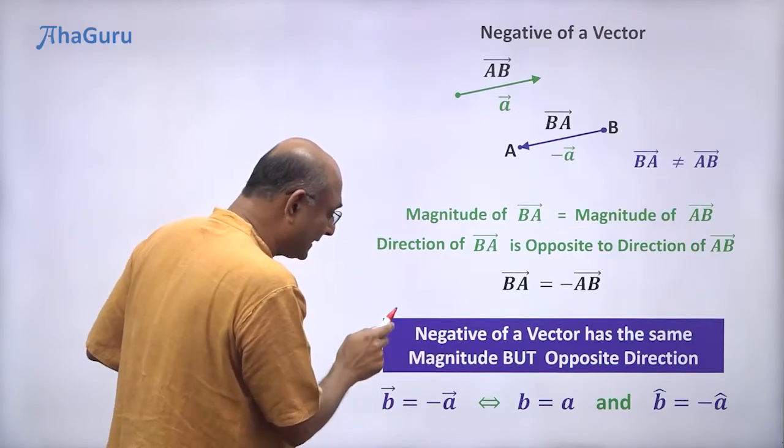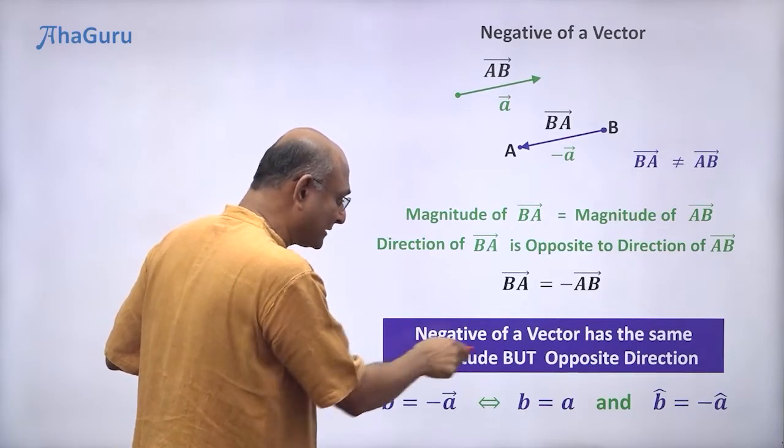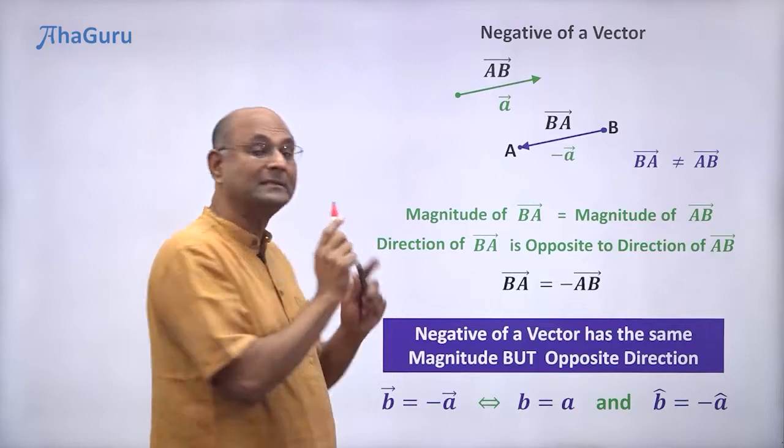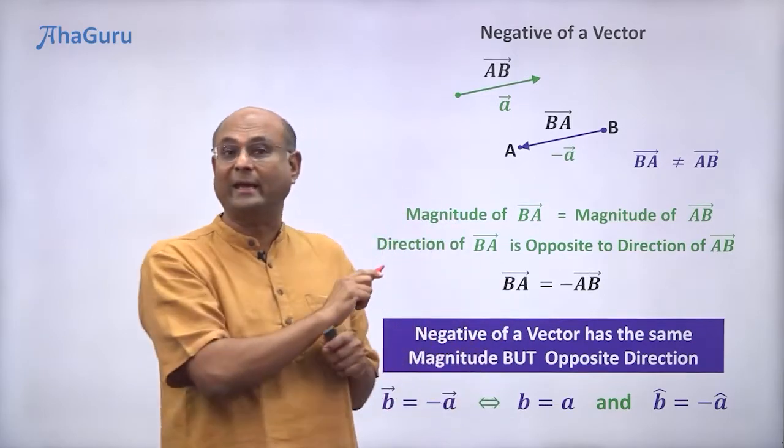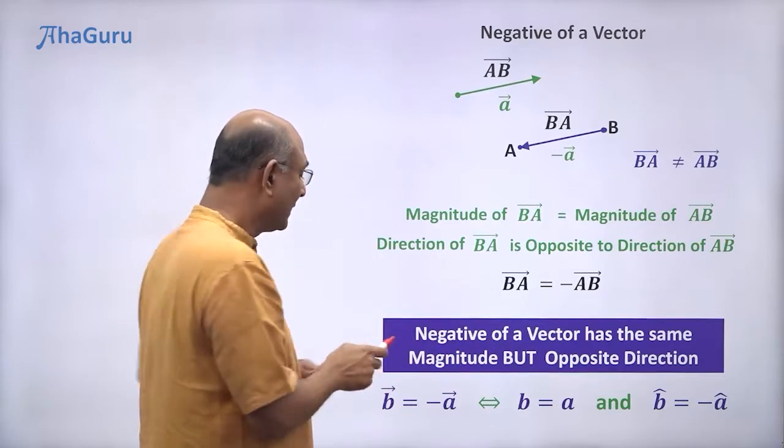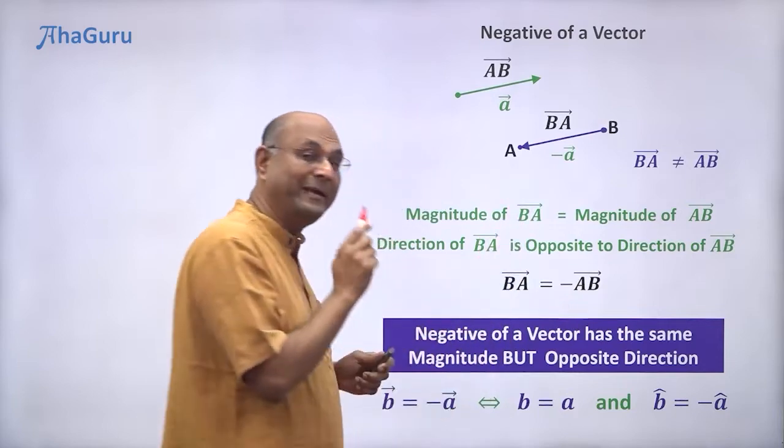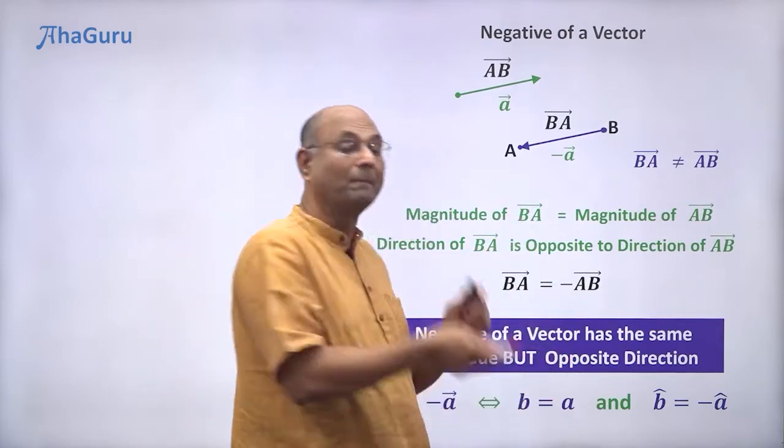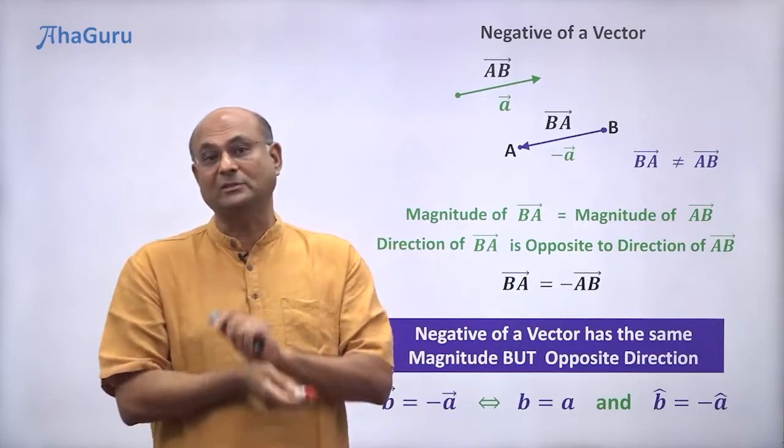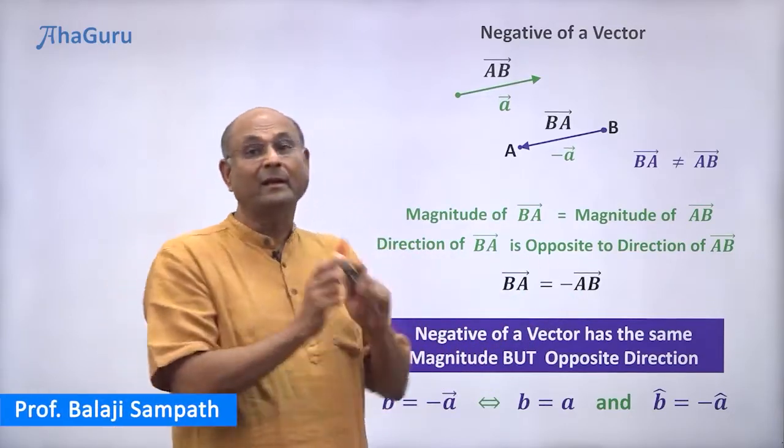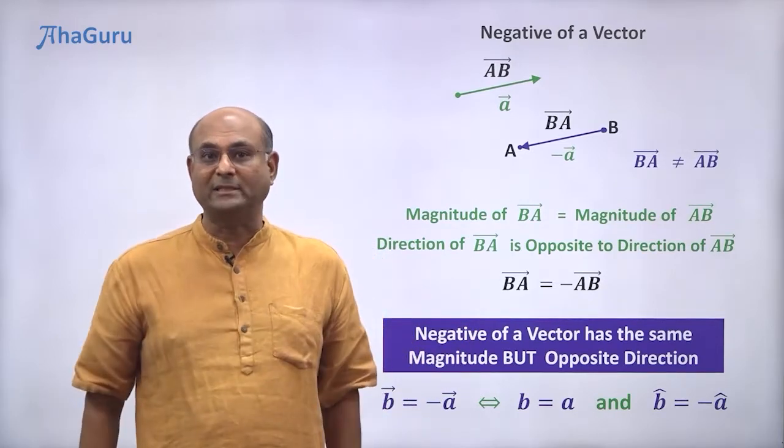So if B vector is equal to minus A vector, that means the magnitude of B vector, which is B, is the same as the magnitude of A vector. So B is equal to A. The magnitudes are the same. But the directions are opposite. That is, the direction of B, B cap, is equal to minus of the direction of A, which is A cap. So B cap is equal to minus of A cap. So what does this mean? Negative of a vector means same magnitude but opposite direction.